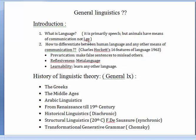This has to be clear in your mind: animals do not have language. You will be provided with many definitions of language. In the second session, you will deal with how to differentiate between human language and any other means of communication, relying on Charles Hockett's 16 features of language. You can look it up: 'Charles Hockett 16 features of language 1963.' I will focus on the last three features, which are universal — they exist in all human languages.